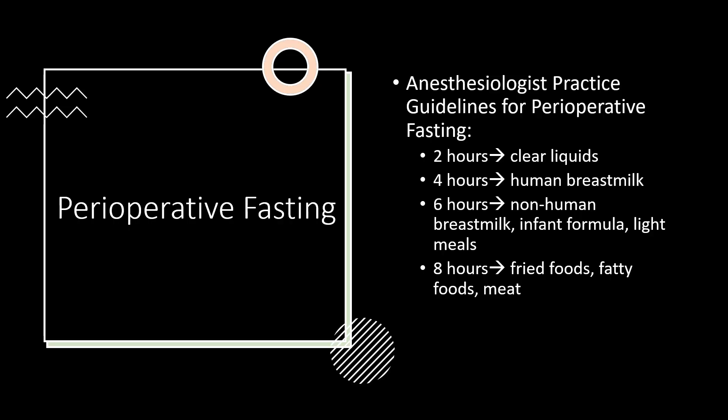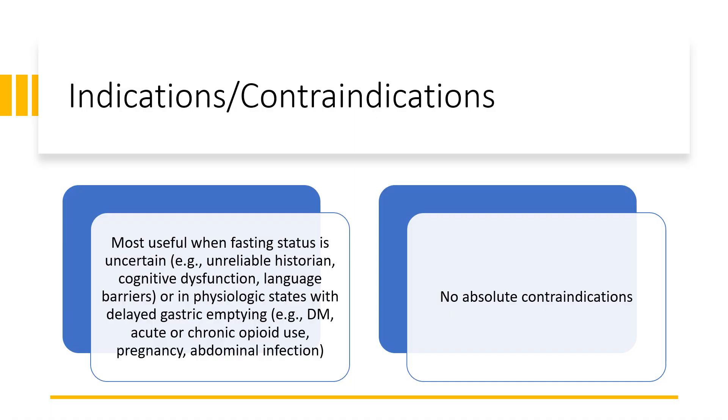The anesthesia guidelines for perioperative fasting are: clear liquids up until two hours before anesthesia; human breast milk four hours; non-human breast milk, infant formula, and light meals six hours; and eight hours if you had fried foods, fatty foods, meat, or large meals. Certain conditions can preclude the NPO guidelines or decrease their sensitivity, specifically conditions that lead to delayed gastric emptying or increased risk of pulmonary aspiration.